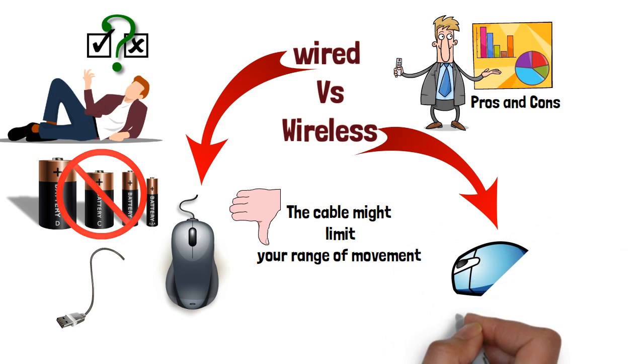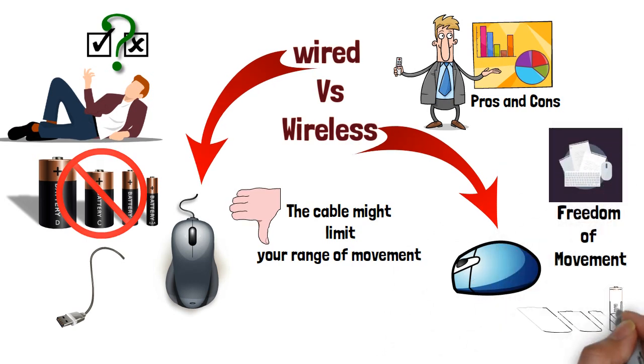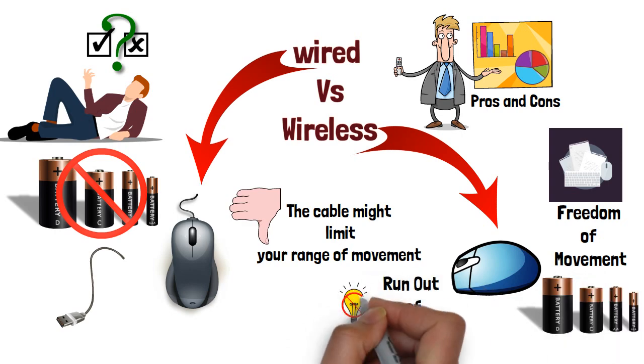Wireless optical mouse. On the other hand, wireless mice offer more freedom of movement, but they need batteries, which means they can run out of power at inconvenient times.